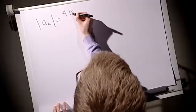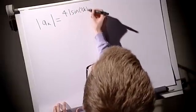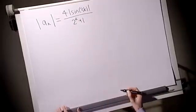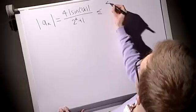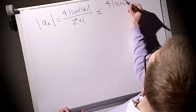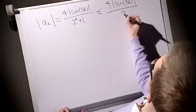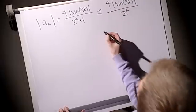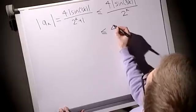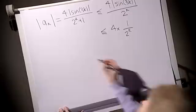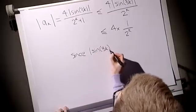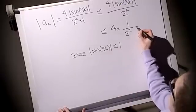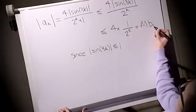So we've seen the modulus of ak was 4 modulus of sine 3k over 2 to the k plus 1. Now we notice that 2 to the k plus 1 is only going to make ak smaller. I can make this bigger by not dividing by something quite so large, just putting 2 to the k. This is good. This is my bk. And this is less than or equal to 4 multiplied by 1 over 2 to the k. Why? Because sine is always between minus 1 and plus 1, so its modulus is less than or equal to 1. And this again is none other than m multiplied by bk.